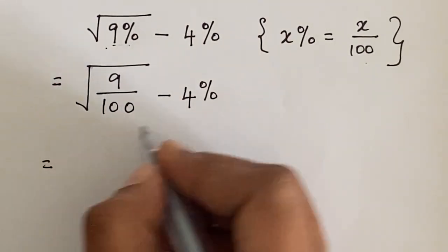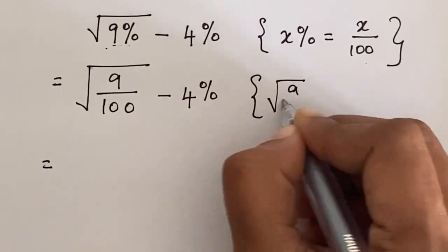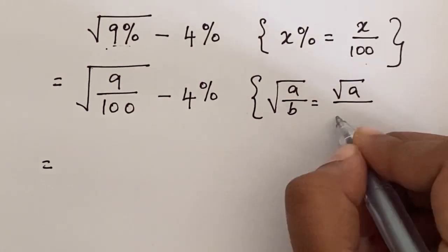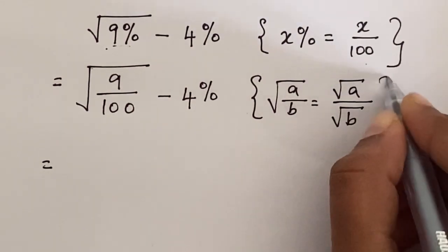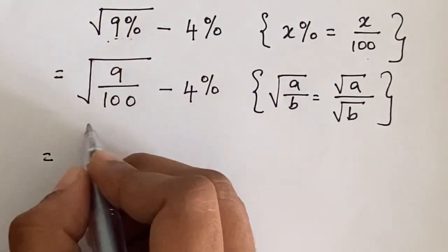Equals, we know that square root of a divided by b can be written as square root of a divided by square root of b. So now, let's apply this formula here.